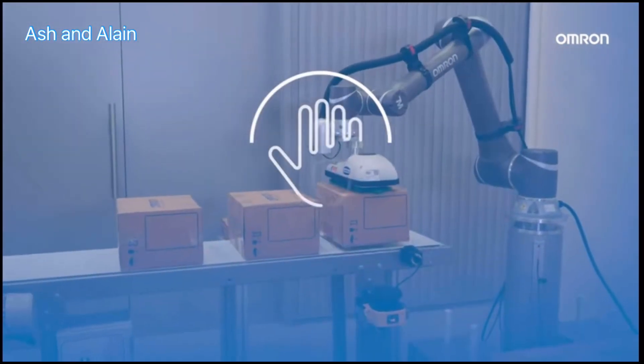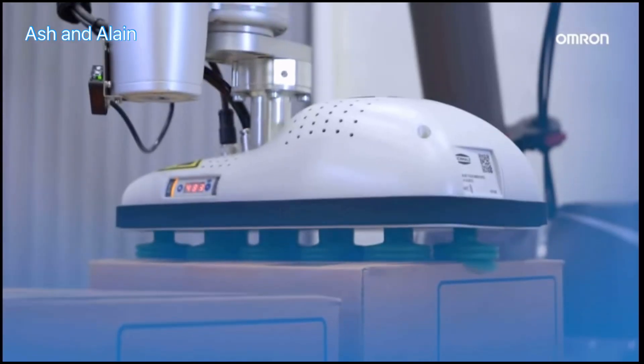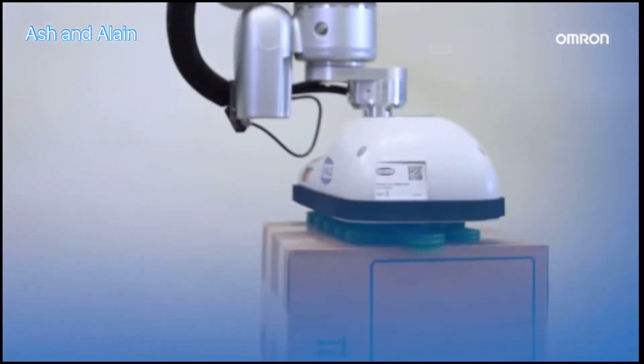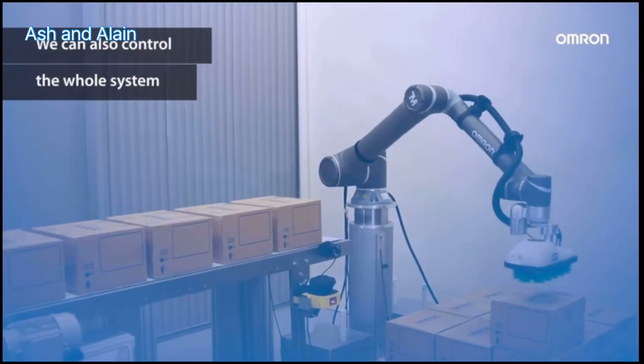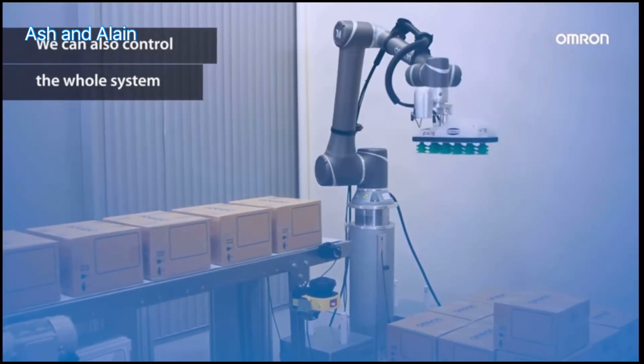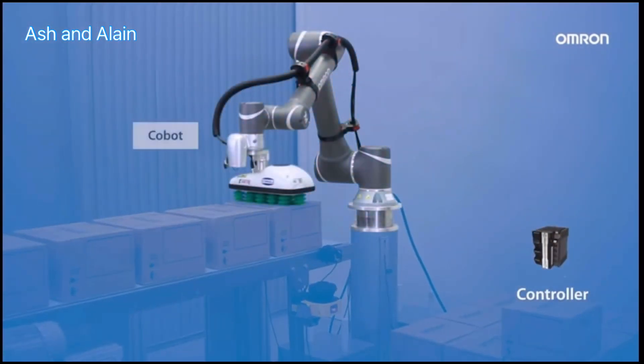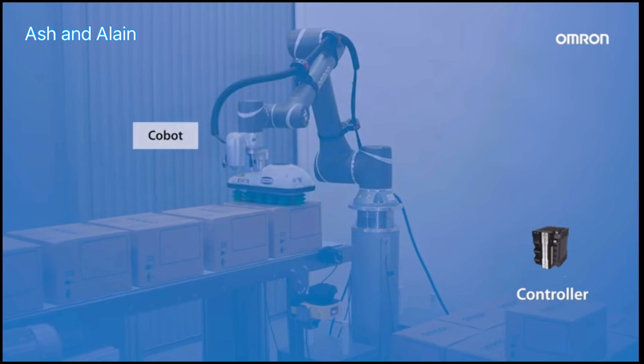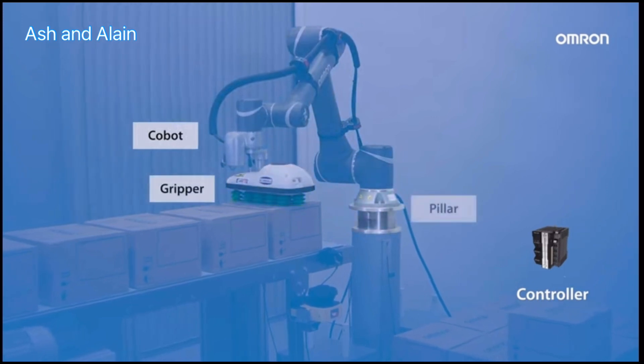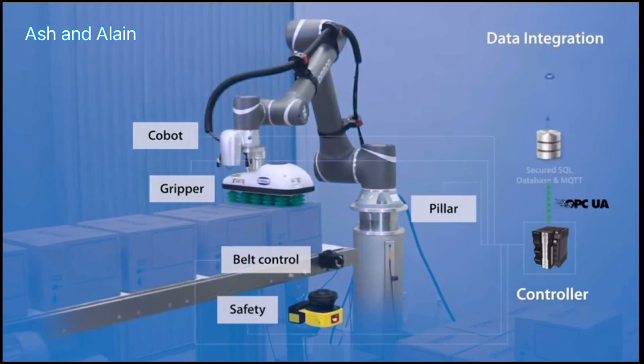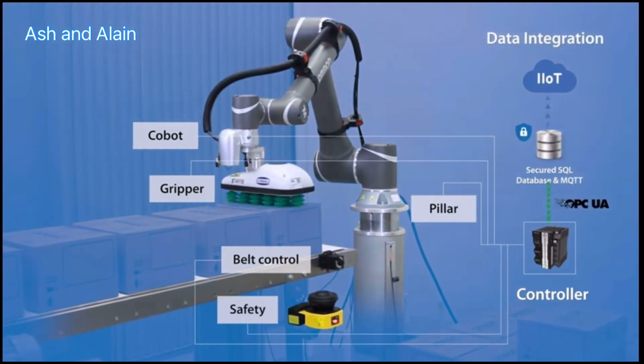We work as a harmonized factory. And besides having this flexible and customizable palletizer function block, what would you say if we tell you that we can also control the whole system? Yes, just as you hear. The OMRON controller handles the complete machine, including not only robot control but also gripper, pillar, and belt control, safety, and data integration, and everything with one integrated development environment.